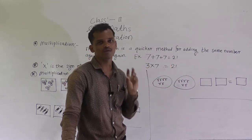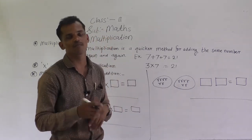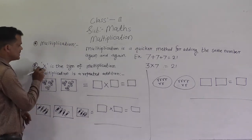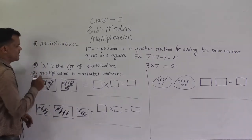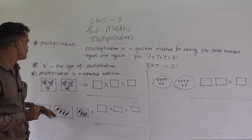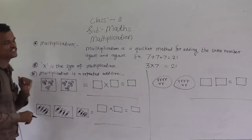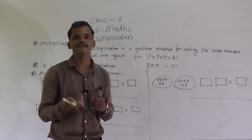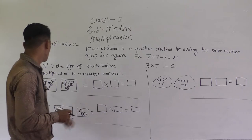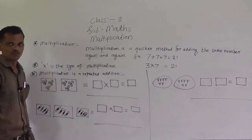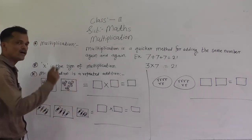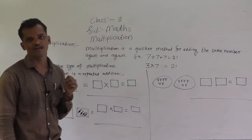This is the very quick method to add the same number again and again. This cross symbol is the sign of multiplication. Multiplication is the repeated addition. How do we call it repeated addition? I am going to explain. See here — there are 2 groups: group 1 and group 2. In group 1, there are 3 flowers.